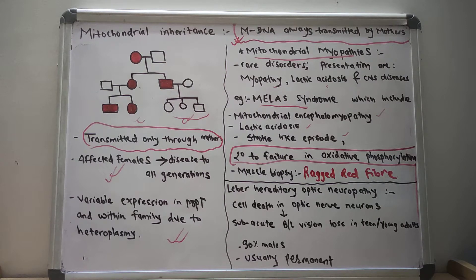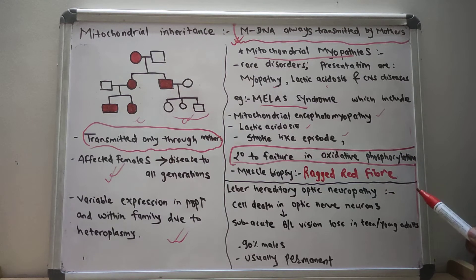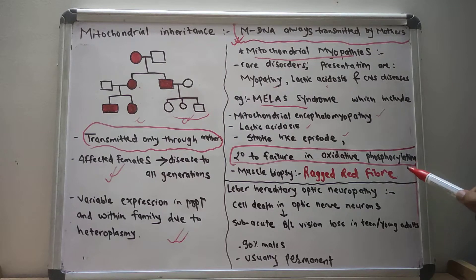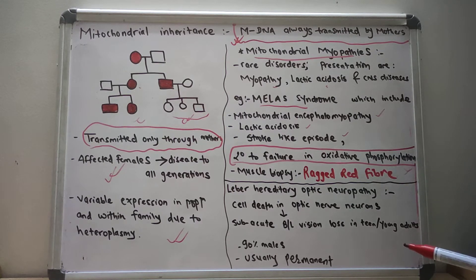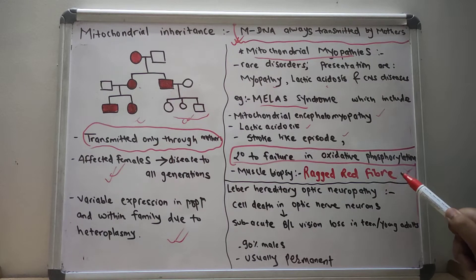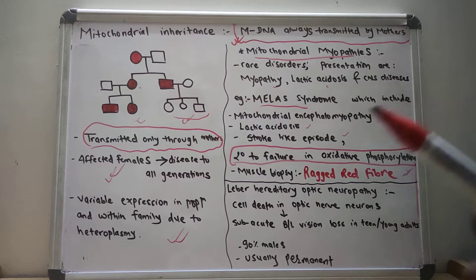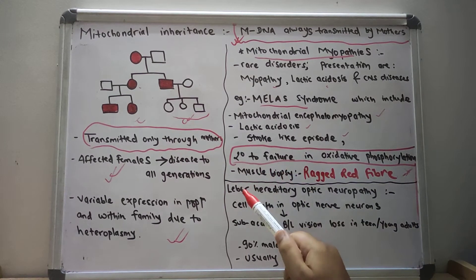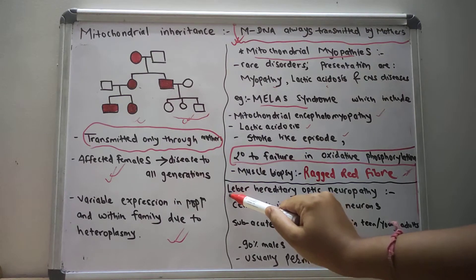One important thing — it always comes up in MCQs — is that when you do a muscle biopsy in a person with mitochondrial myopathies, you see ragged red fibers. The ragged red fiber is the specific lesion seen in the muscles on muscle biopsy.